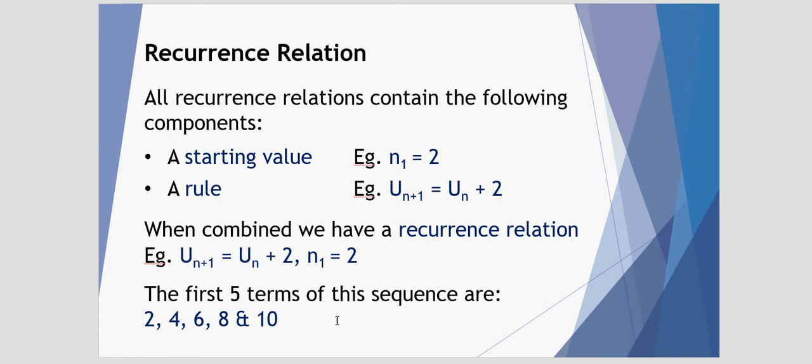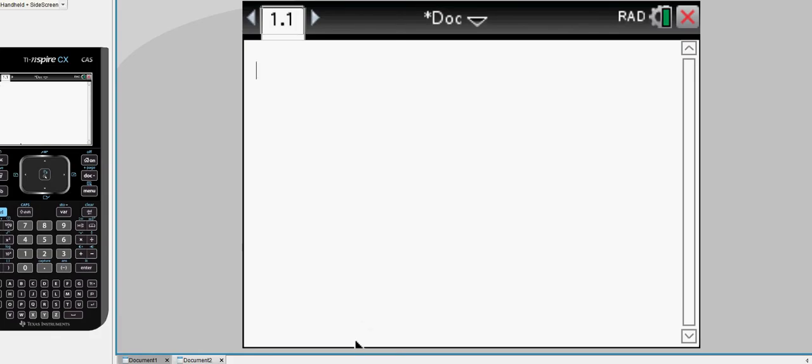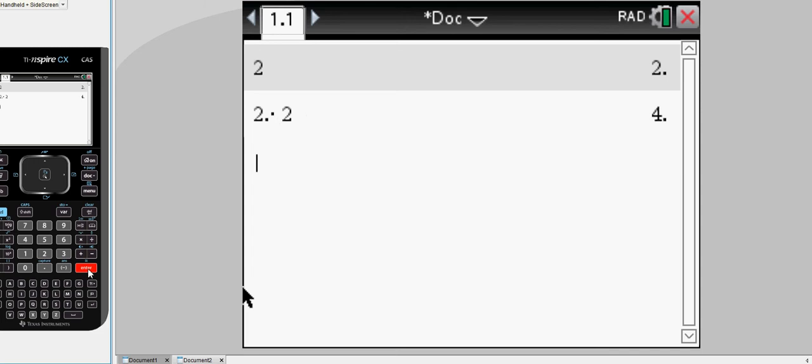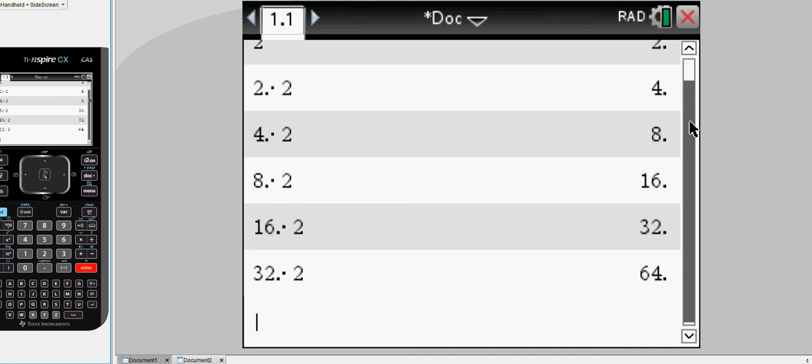Now if we want to look at this in a calculator mode, we can jump across to our TI Inspire and we can just simply type in a 2, press enter, and then hit add 2. Now using this technique, when I press return, I will get an answer of 4. If I press return again, I get the next term of 6, and so forth. So using your TI Inspire, you can quite simply repeat the same process over and over again to calculate the terms in a particular sequence.